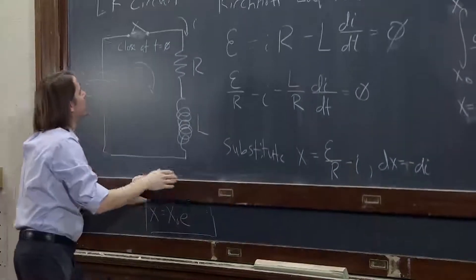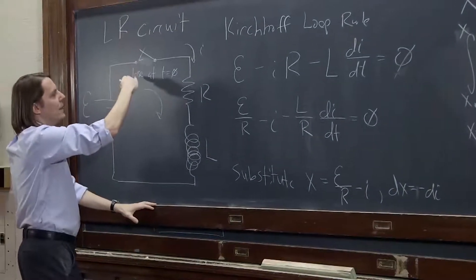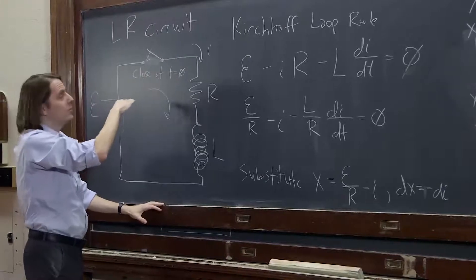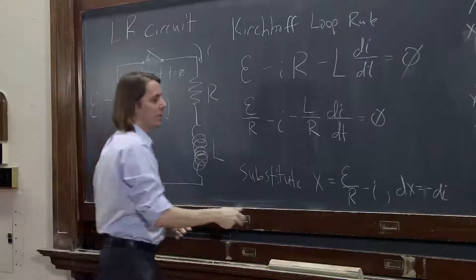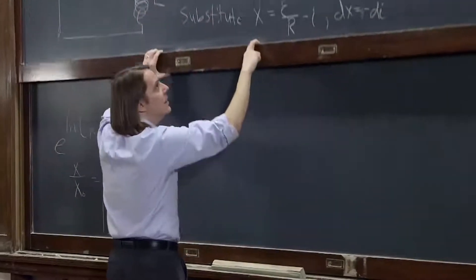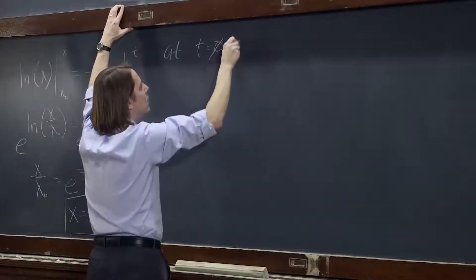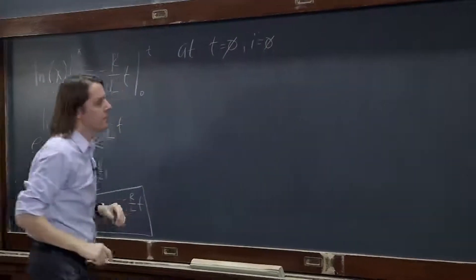The real circuit at t equals 0, we said we closed it at t equals 0. And actually the current right at t equals 0 is going to also be 0. It takes a while for the current to get going in the circuit. So at t equals 0, i equals 0.